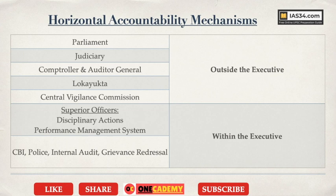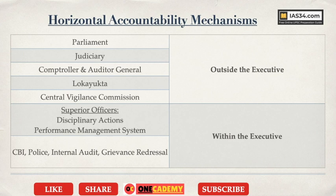Other within-executive bodies include the CBI, police, and internal audit mechanisms — every department has internal auditors who vet project proposals. There are also grievance redressal mechanisms within the system. So these are the parts of governance and good governance. Please come back and revise, like this video, share it with other aspirants, and subscribe to the channel, as many more free high-quality UPSC lessons are coming.